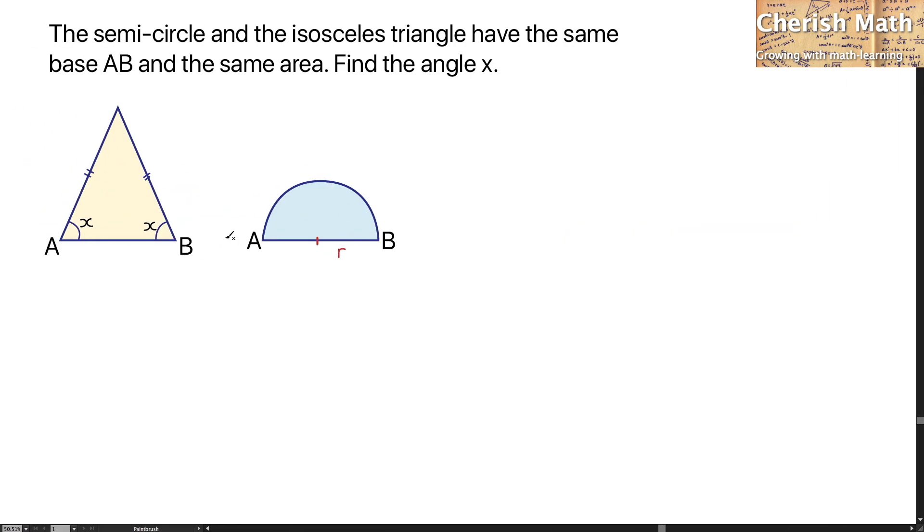For the triangle on the left-hand side, half of this length of AB is the same as the radius of the semicircle, which I'm going to label here as R as well. I'm going to highlight the height of this triangle with the letter H.